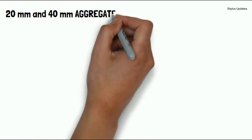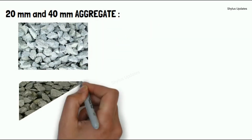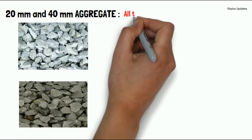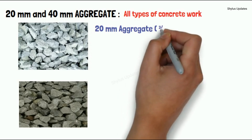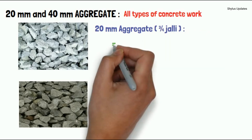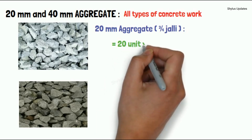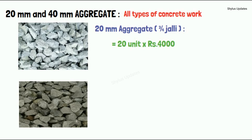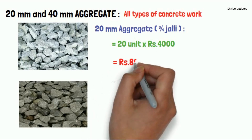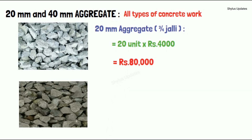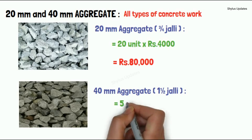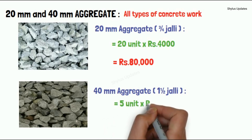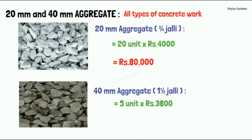20mm and 40mm aggregates are used in all types of concrete work. For a 1400 square feet house, 20 units of 20mm aggregate are required at Rs. 4,000 per unit, giving Rs. 80,000. For 40mm aggregate, 5 units are required at Rs. 3,800 per unit, giving Rs. 19,000.